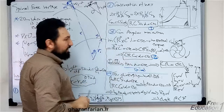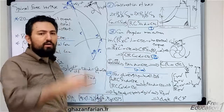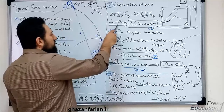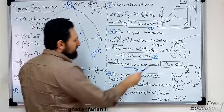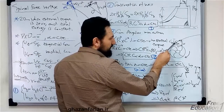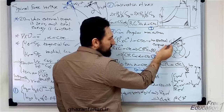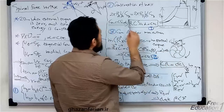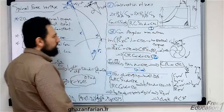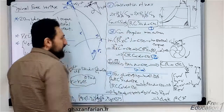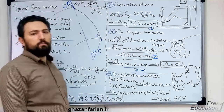Based on the velocity triangle, the component of the absolute velocity along the radial direction equals C times sine of alpha. Alpha is the angle of the absolute velocity of the fluid — this side is the absolute velocity and alpha is the angle shown in the velocity triangle. So the projection of C along the radial direction equals C times sine of alpha. After substituting this equation, you find that the product of R, C, and sine of alpha should remain constant based on the continuity equation.